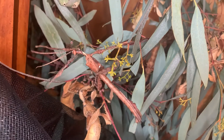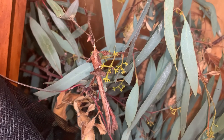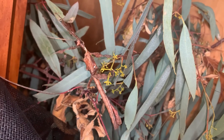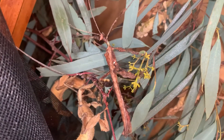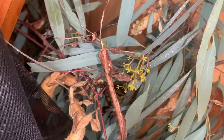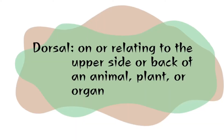In this video we will be discussing the anatomy of the male Extatosoma tiaratum in full detail via dissection and microscopic photographs. Let's start with the dorsal external anatomy. We will first begin with a quick review of the structures and then move on to more detailed information.